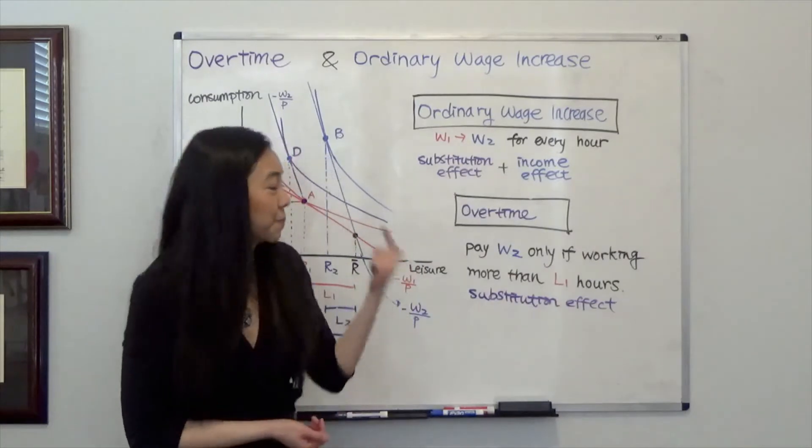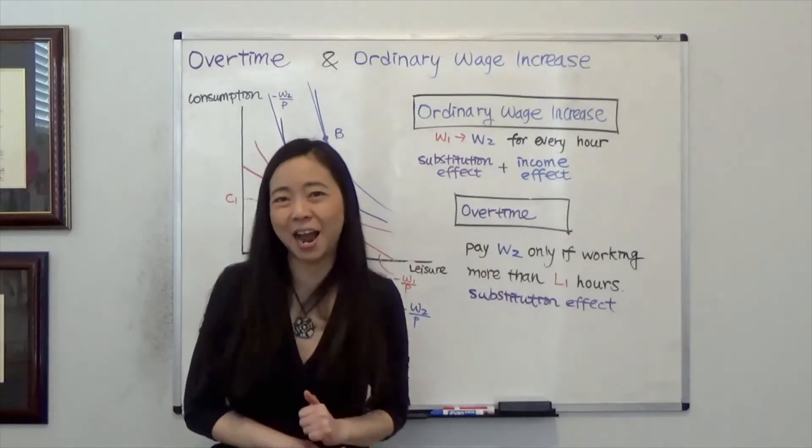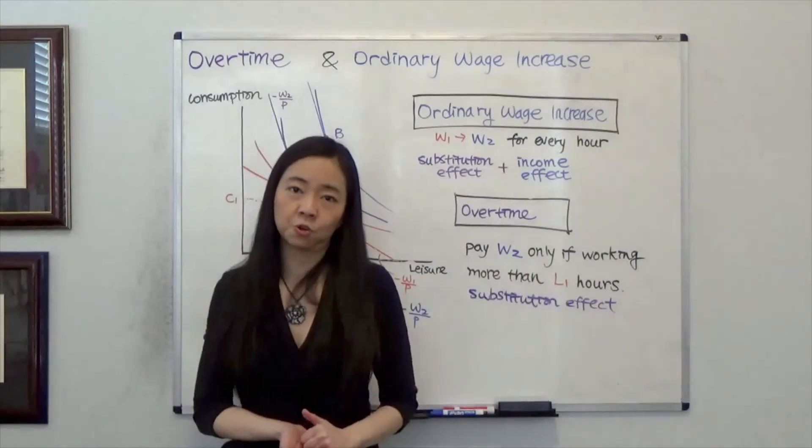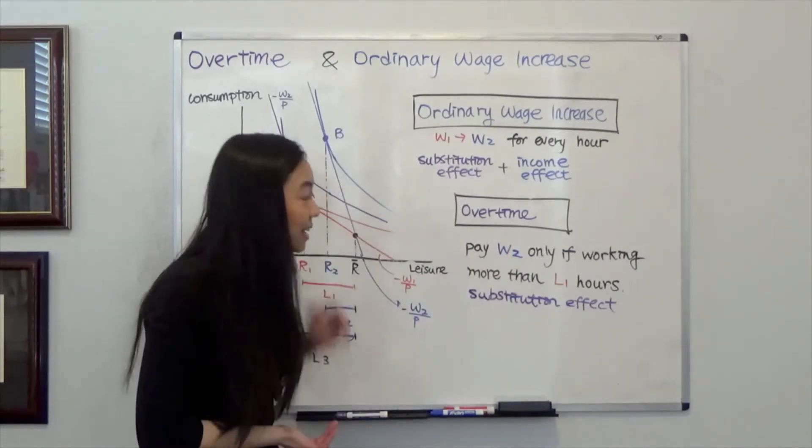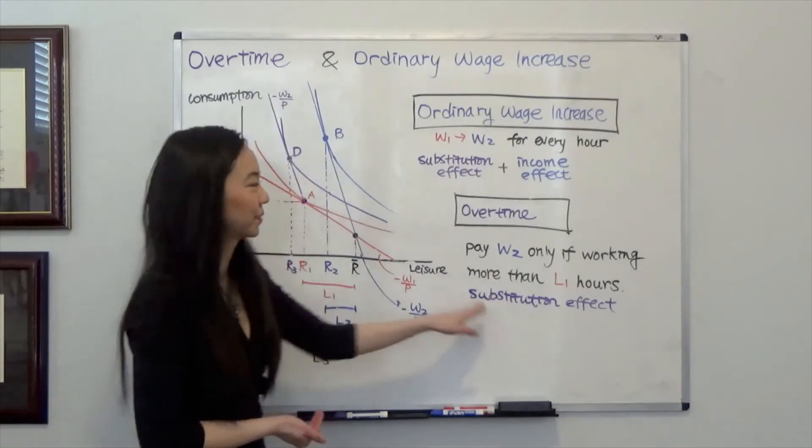the employer is going to pay me W1 per hour. But if I work more than L1 hours, then for each additional hour, I am going to get paid a higher rate W2. And in this case, there is only substitution effect. So let's see how it works.